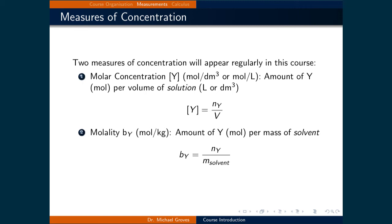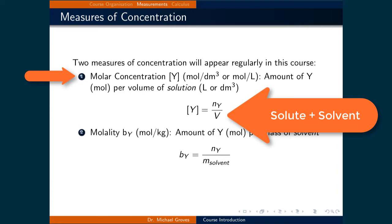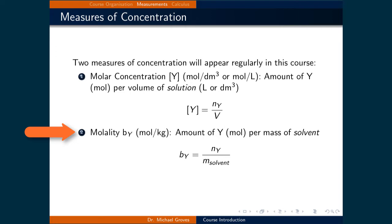The final three slides are focused on how we quantify the amount of a substance. The two presented here are the molar concentration and the molality, which will both appear in the course. The molar concentration is the amount of a substance in moles per volume of solution. Note that the solution includes both the solute and the solvent. The molality is the amount of a substance in moles per mass of solvent.